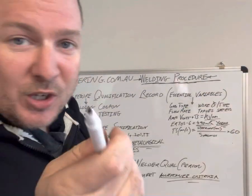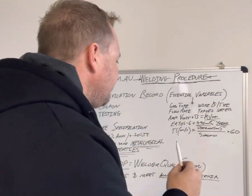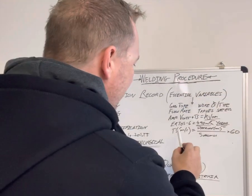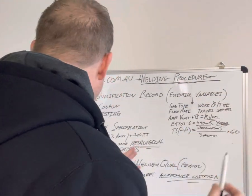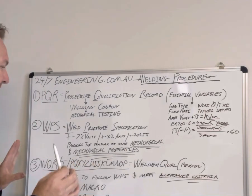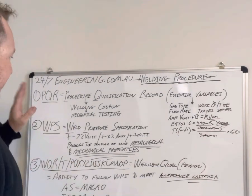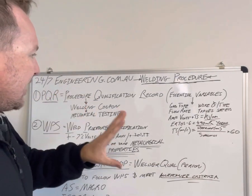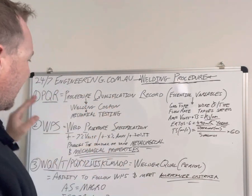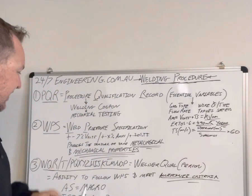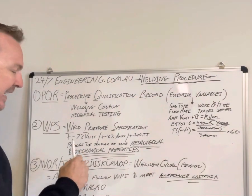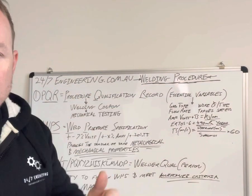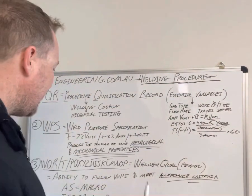After you get your PQR sorted, you write your WPS — Welding Procedure Specification. That's why you always have a range, and what you effectively want to do has been proven over many years of welding.